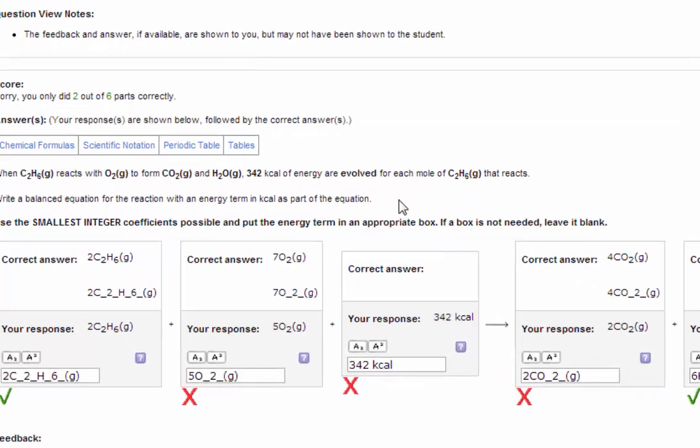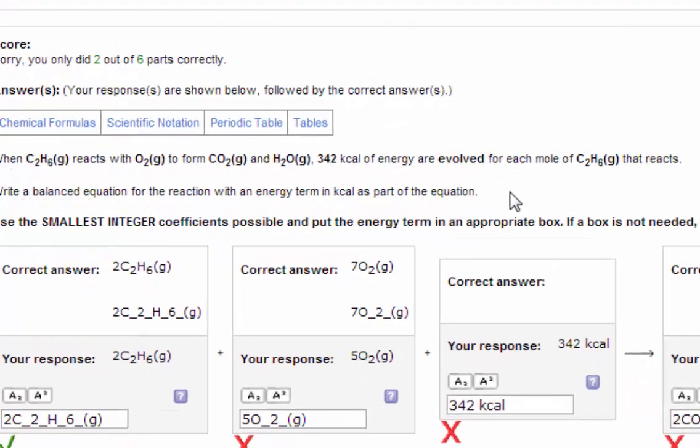The problem reads, 342 kilocalories are evolved, meaning it's liberated, given off. So the heat term goes on the right side.